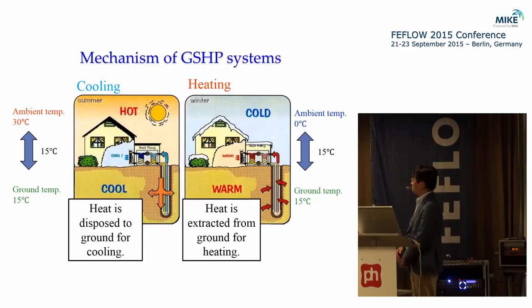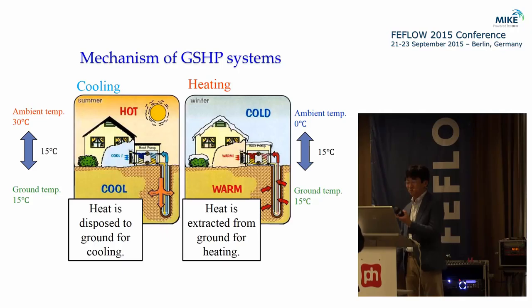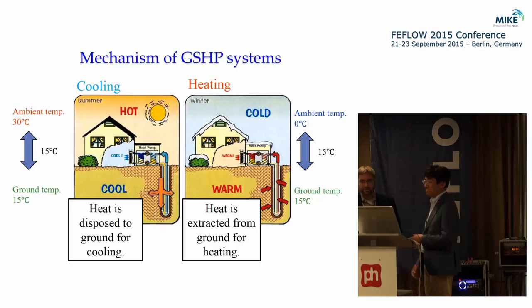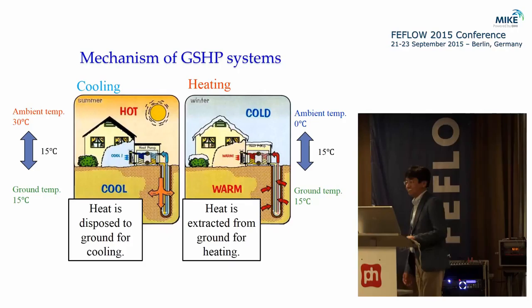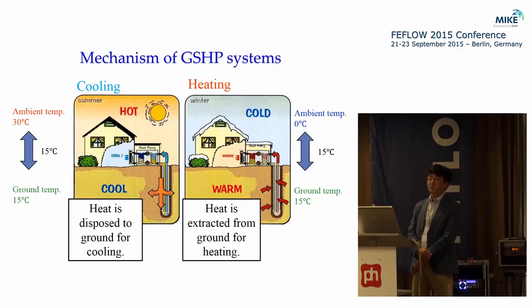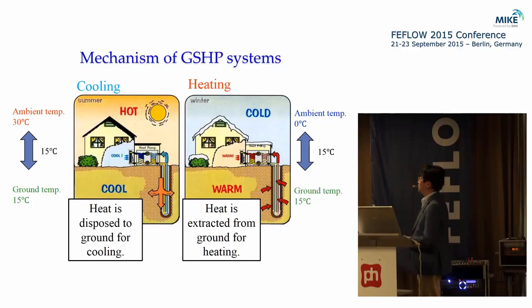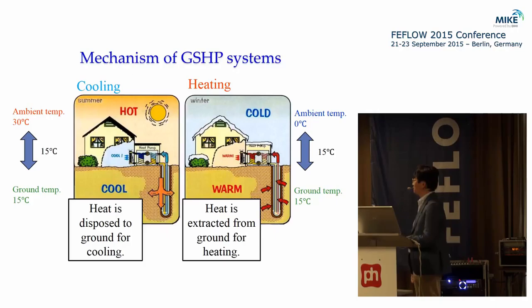In summer, the ambient temperature is much warmer than the ground temperature, so we can perform cooling operation by disposing heat from the building to the ground. In winter, the ground temperature is much higher than the ambient temperature, so we can perform heating operation by extracting heat from the ground. This system uses the nature of constant temperature of the ground.